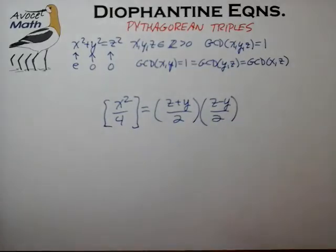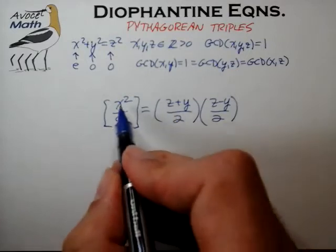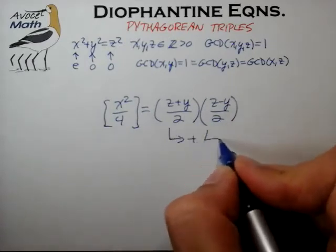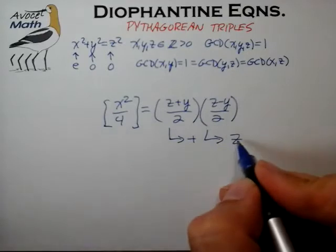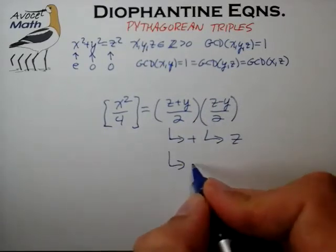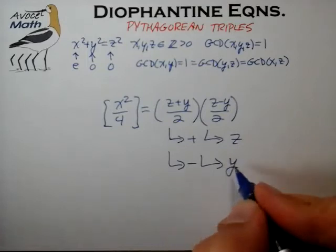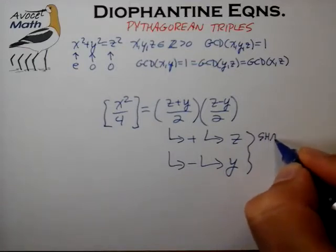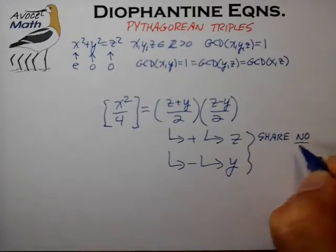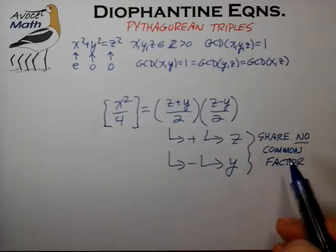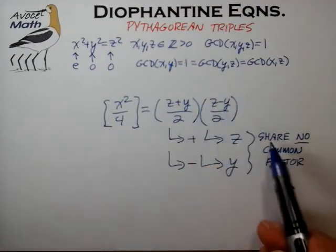We can continue further with our analysis. We observe that once we've reduced x²/4 into a product of these two terms, we can add them together to reconstitute z — since z/2 plus z/2 gives z, and the y's cancel. Likewise, we can take the difference of these two terms to regenerate y. This is important because we know that x and y share no common factor, and from that we can conclude that these two product terms also share no common factor.